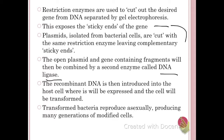Transformed bacteria will then reproduce asexually, creating many generations of the modified cell and causing that recombinant DNA to be passed from generation to generation. We are going to be doing an example of this with bacterial cells using a recombinant plasmid.